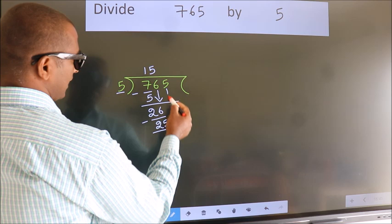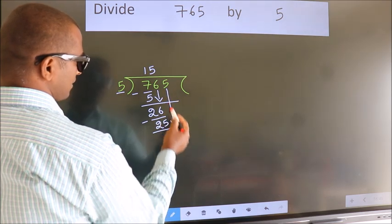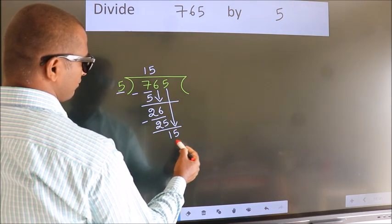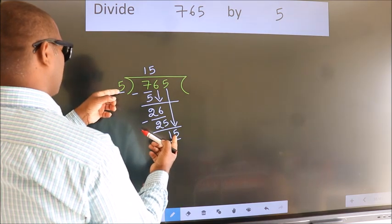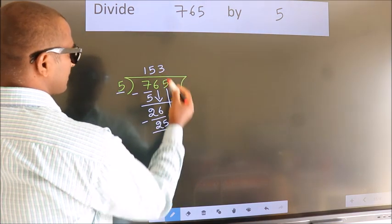After this, bring down the beside number. So, 5 down. So, 15. When do we get 15 in the 5 table? 5 threes, 15.